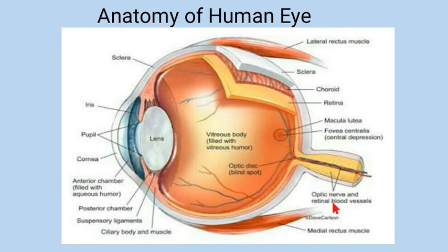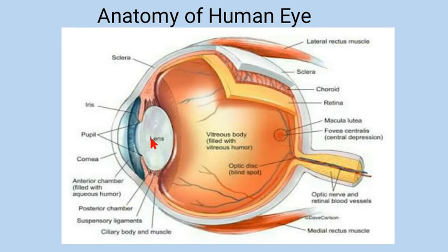Now let's look at the anatomy of the human eye. The outermost layer is the conjunctiva, which is transparent. Next to the conjunctiva is the sclera, the white part of the eye. Then there is the cornea, a dome-shaped structure. Inside the iris and pupil, a lens is present, which is attached by means of ciliary muscles and suspensory ligaments. Between the lens and cornea is the anterior chamber, filled with aqueous humor — a fluid produced by the ciliary body that maintains the shape of the cornea.